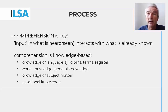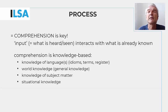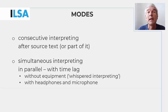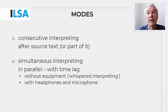Speech production is also a complex knowledge-based process, but it is often felt to be more natural and not given as much consideration. The key difference in interpreting is that the ideas to be expressed are not the interpreter's own, but are derived from the comprehension process. The basic process of interpreting can take two different forms, depending on the temporal relationship between the source and target texts.